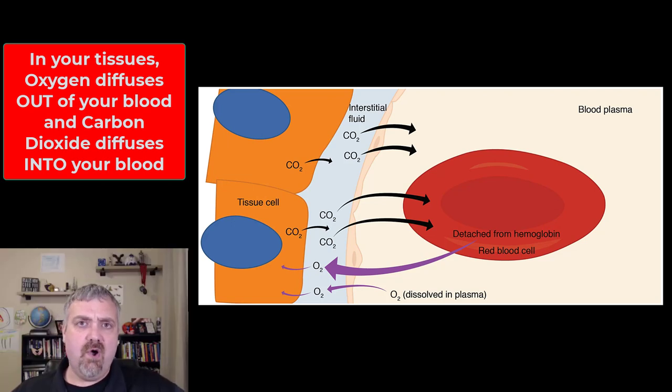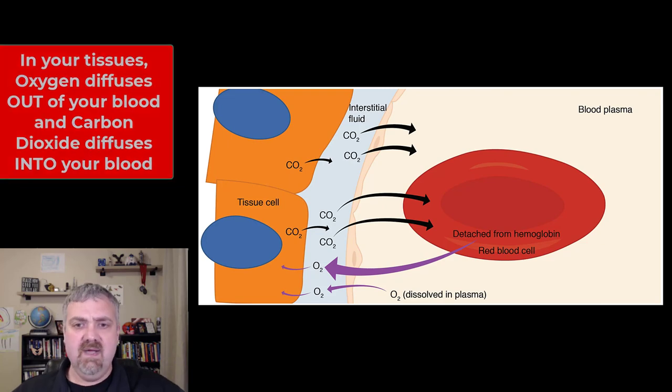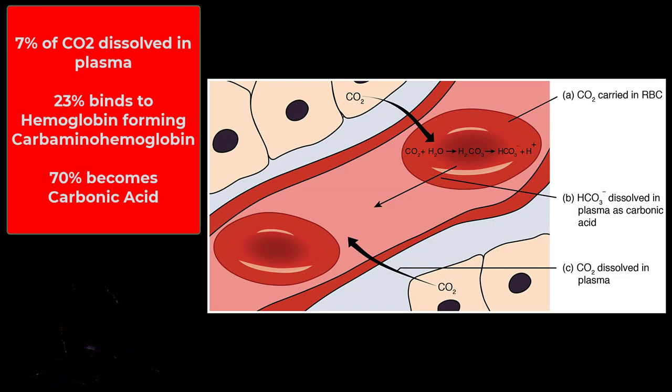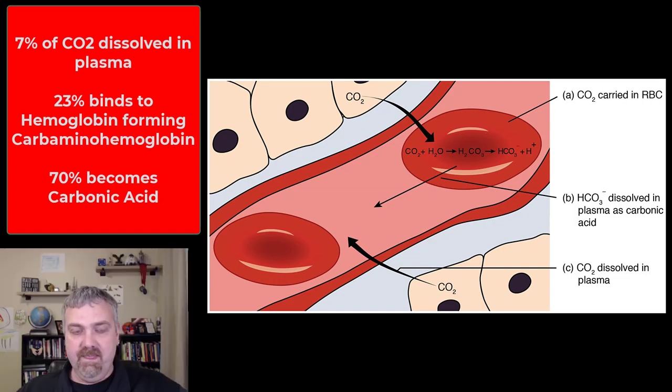So almost all your oxygen is going to be carried on hemoglobin, we covered that back in the blood chapter. A tiny bit can be dissolved in your plasma but let's look more specifically at the three ways that carbon dioxide is carried back. So number one, about 7% of the carbon dioxide will be dissolved right in plasma and carried back to your heart and lungs.